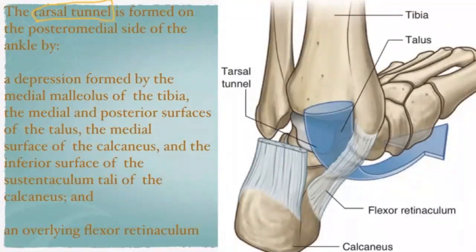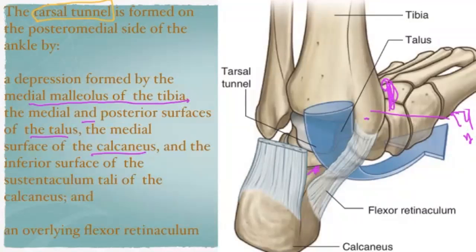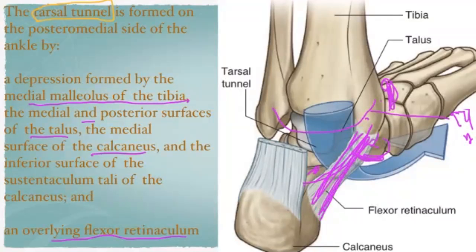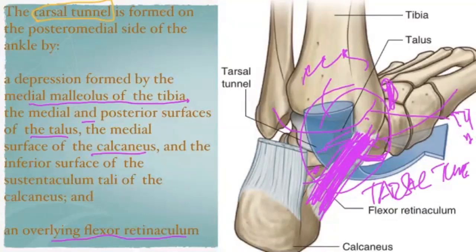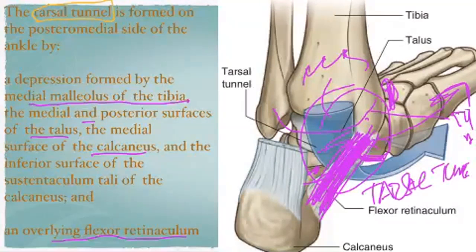These structures pass through a canal called the tarsal tunnel, which is formed by the posteromedial side of the ankle. The tarsal tunnel is bounded by the medial malleolus of the tibia, the middle and posterior surface of the talus, the medial surface of the calcaneus, the inferior surface of the sustentaculum tali, and the overlying flexor retinaculum. Whenever the structures in the tarsal tunnel are inflamed, there will be pain extending into the foot — this is called tarsal tunnel syndrome (TTS).